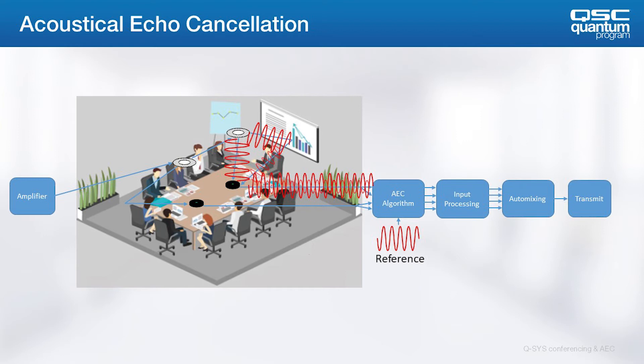Removing these signals becomes a very difficult problem to solve. This hard work is done by the Acoustical Echo Canceling Algorithm, or AEC block. We send a reference signal to the AEC algorithm, which tells it what to look for and remove.